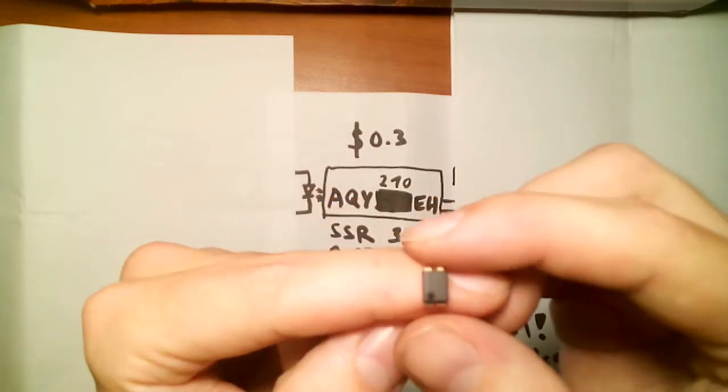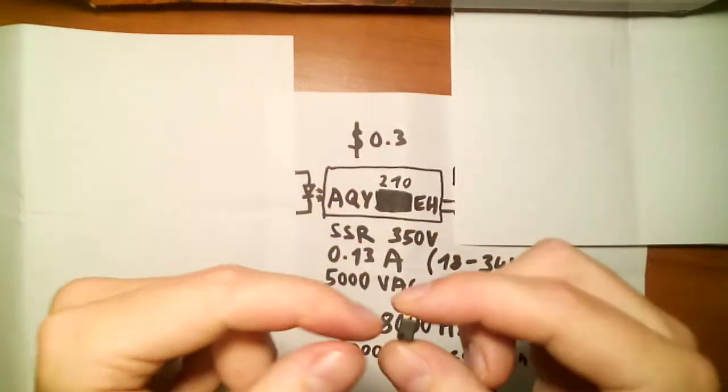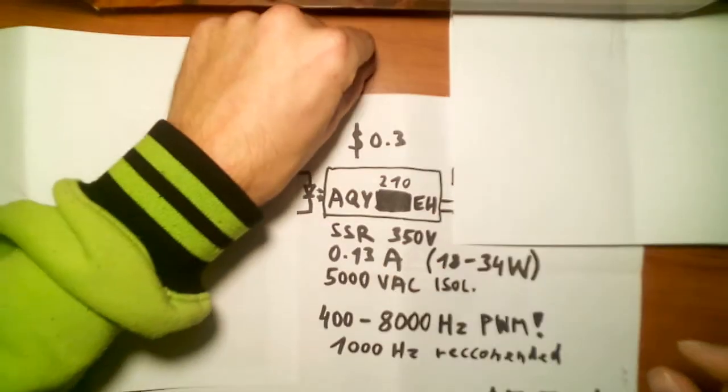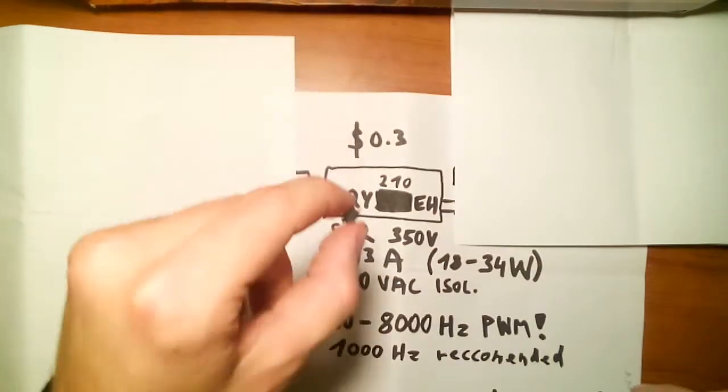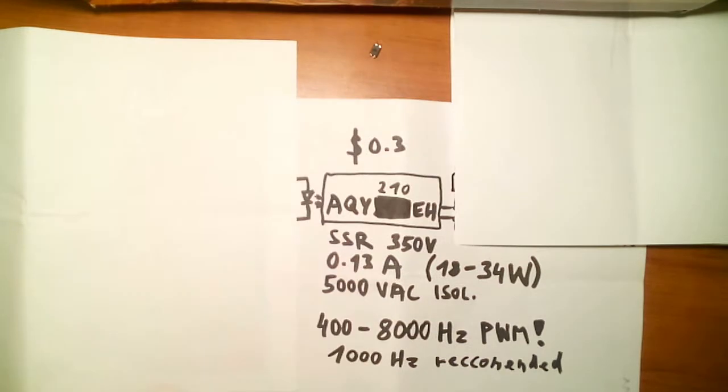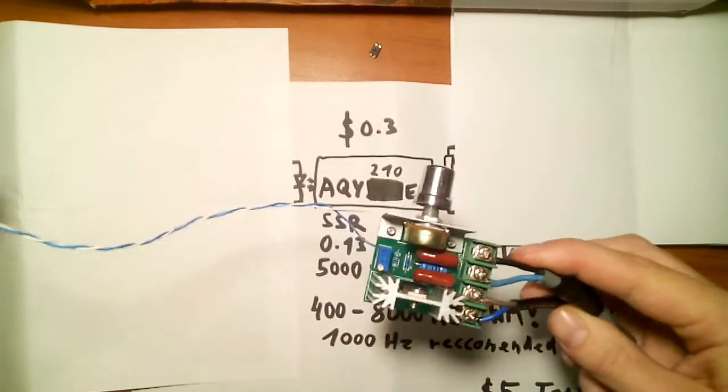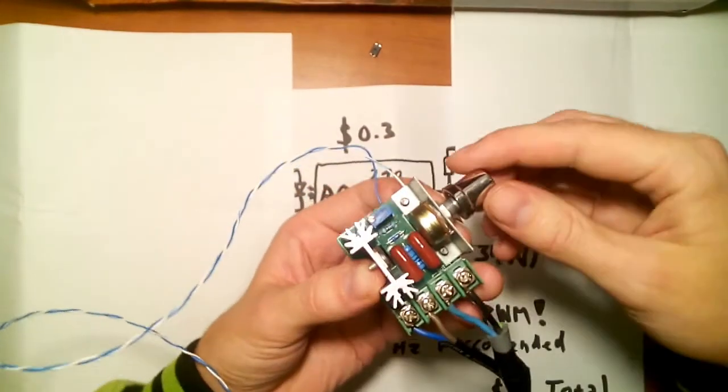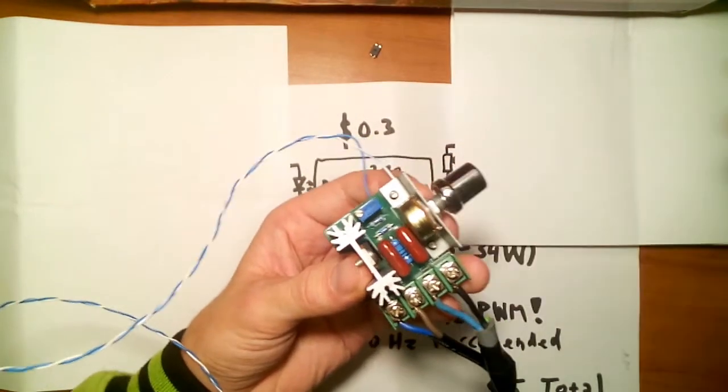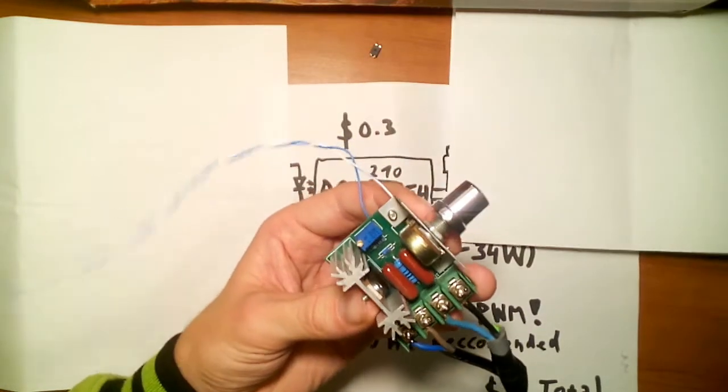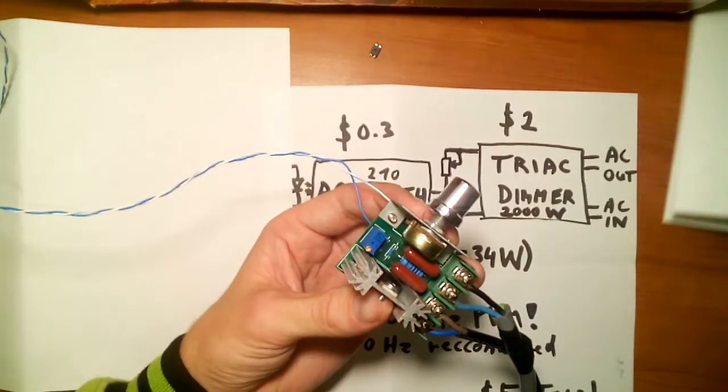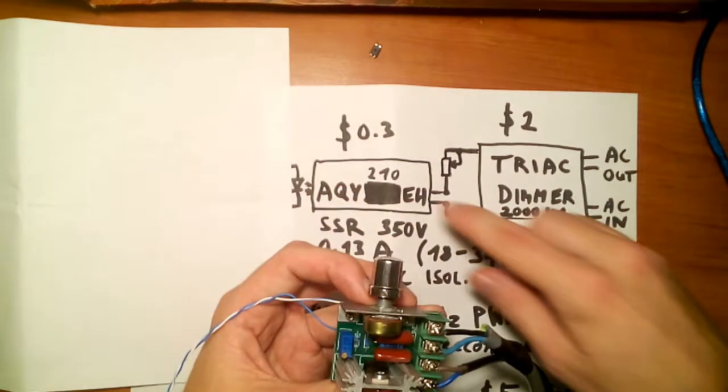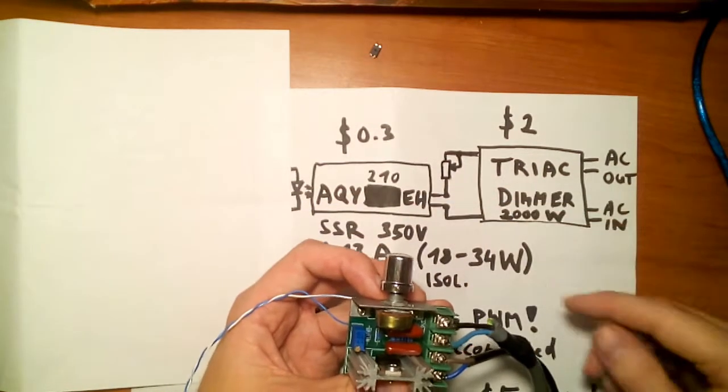But if you want to switch higher loads, you can still not only switch but also regulate. But you can also use this one, which is quite a cheap triac regulator or dimmer. And I found a way how you can connect one to another.